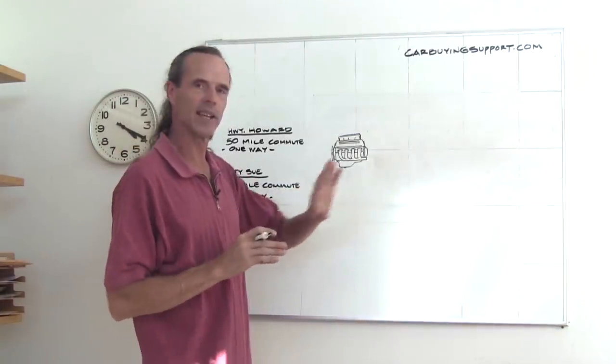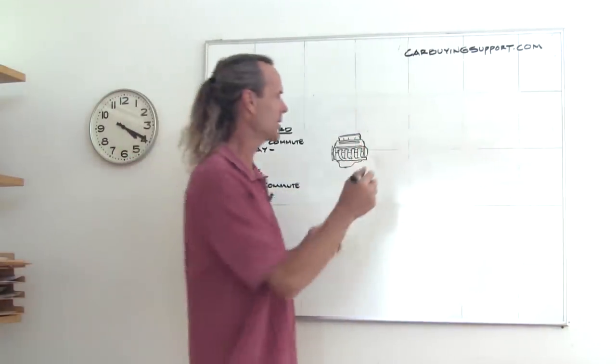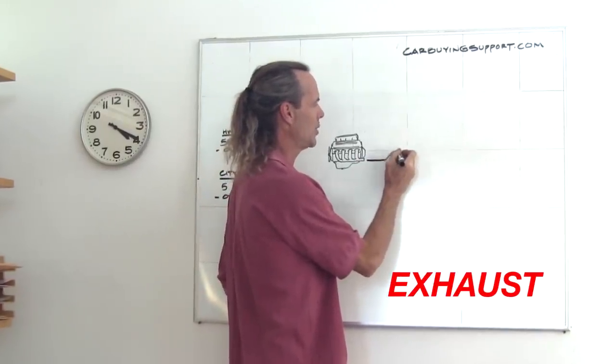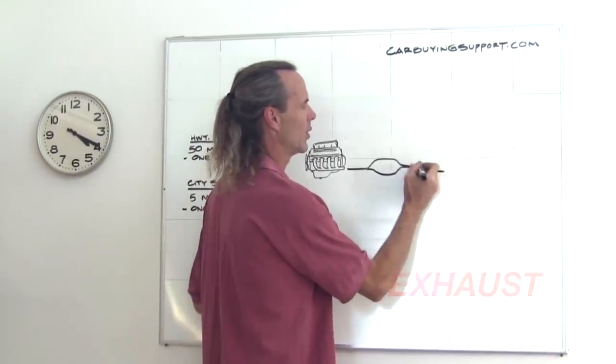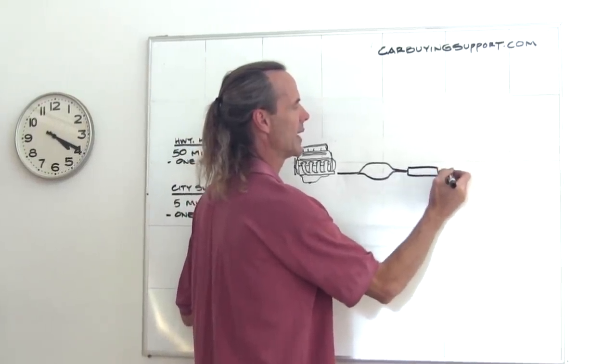I'm going to revisit the condensation issue briefly. This time, we'll be on the exhaust. Now, you have the catalytic converter, which then goes to the muffler, and then you've got the tailpipe, right?